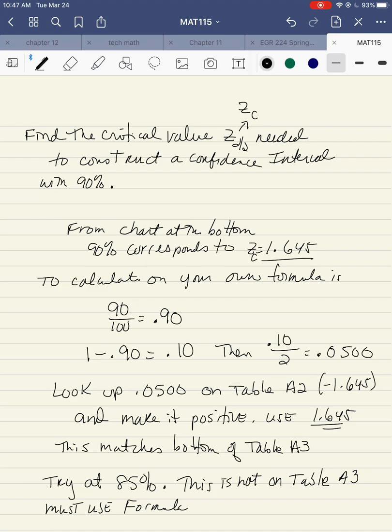But let's say 90% was not on the chart. To calculate it on your own, you use the formula 90 divided by 100. This just converts the 90% to decimal. So that's equal to 0.90. You subtract 1, or 0.90 from 1, which gives you 0.10. Then you take that subtraction number, and you divide it by 2. So here it's 0.10 divided by 2, and that comes out to 0.0500. 0.0500 is going to be looked up on table A2.